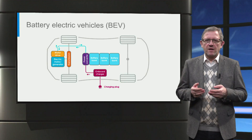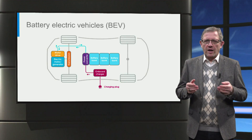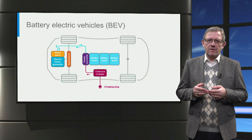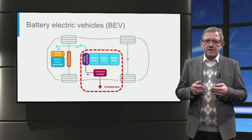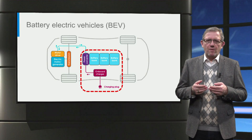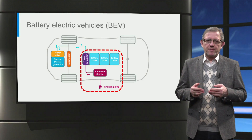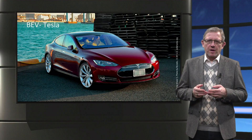To overcome this, battery electric vehicles or all-electric vehicles have only an electric motor and no internal combustion engine. The vehicle uses a large traction battery pack to power the electric motor, and the battery must be charged from a power outlet where it is parked. The Tesla Model S is an example of a battery electric vehicle.